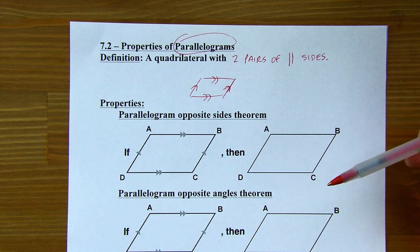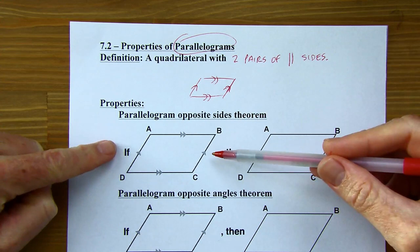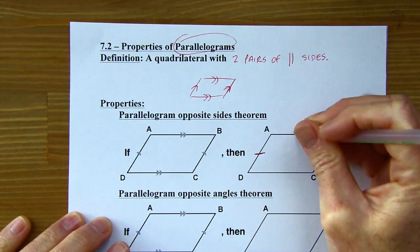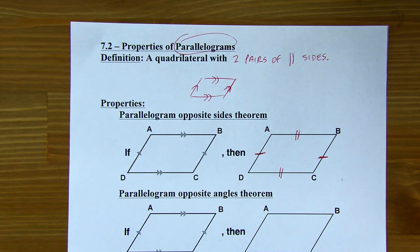First, we've got the parallelogram opposite sides theorem. So if you have a parallelogram, then the opposite sides of that parallelogram — well, I already know they're parallel, so that doesn't count as a property — but they're also going to be congruent. In every parallelogram, the opposite sides are congruent. That's the parallelogram opposite sides theorem.